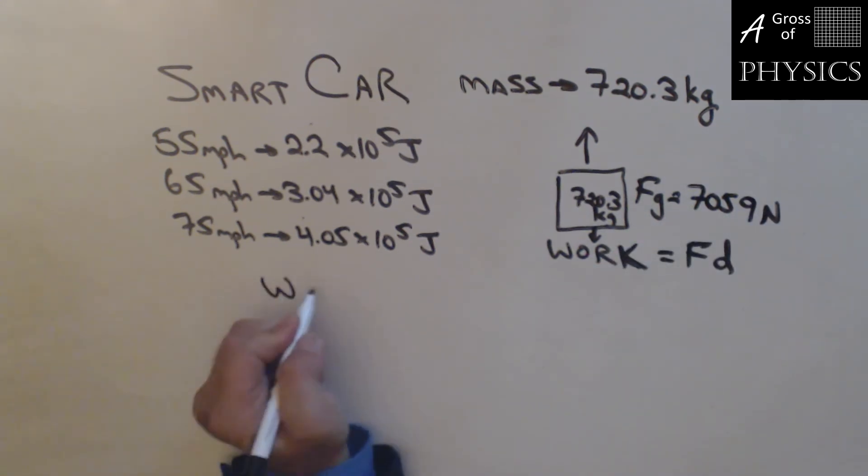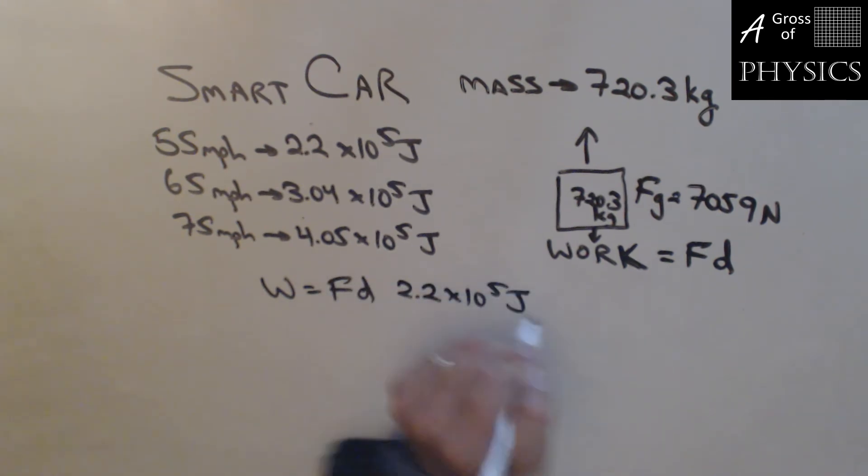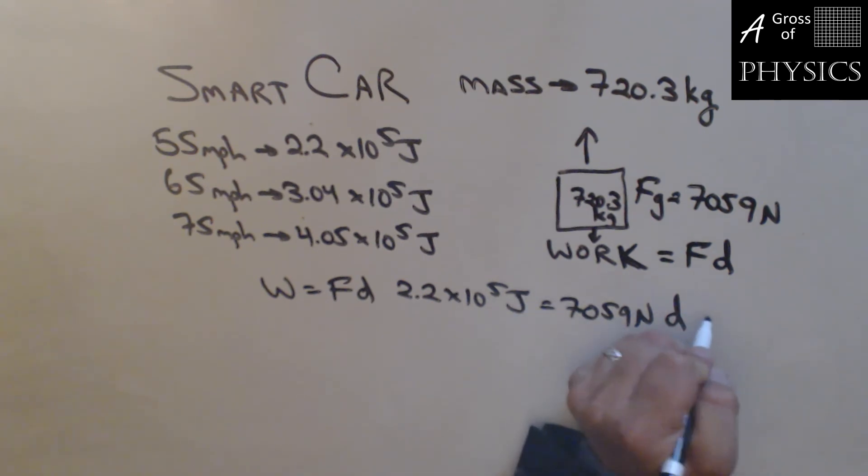If I'm trying to find the work, which is 2.2 times 10 to the 5 joules equals 7059 times D, how high would I have to pull a car vertically to find the same amount of energy? So if I do 2.2E5 divided by 7059, I would have to lift the car, the D would be 31.2 meters above the ground. That's a more concrete value for us.